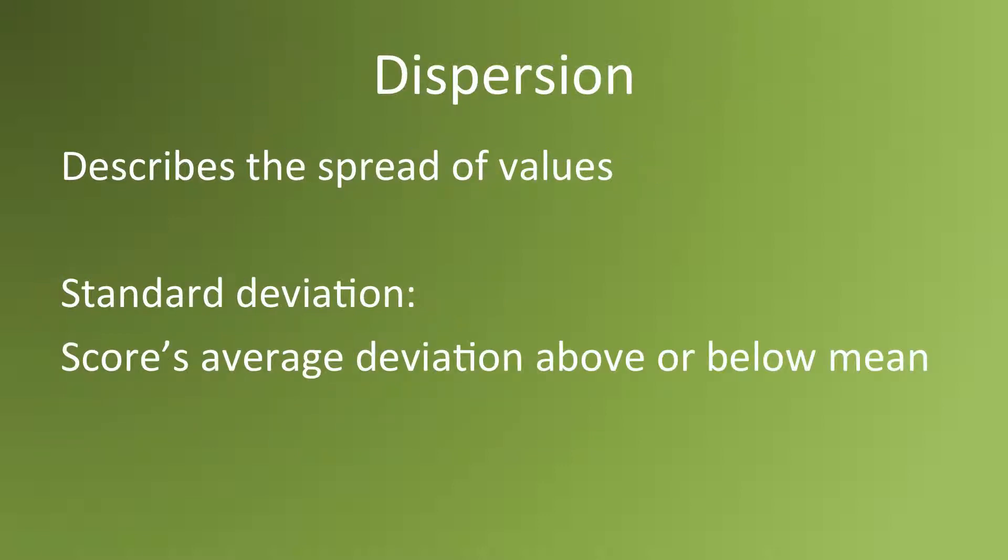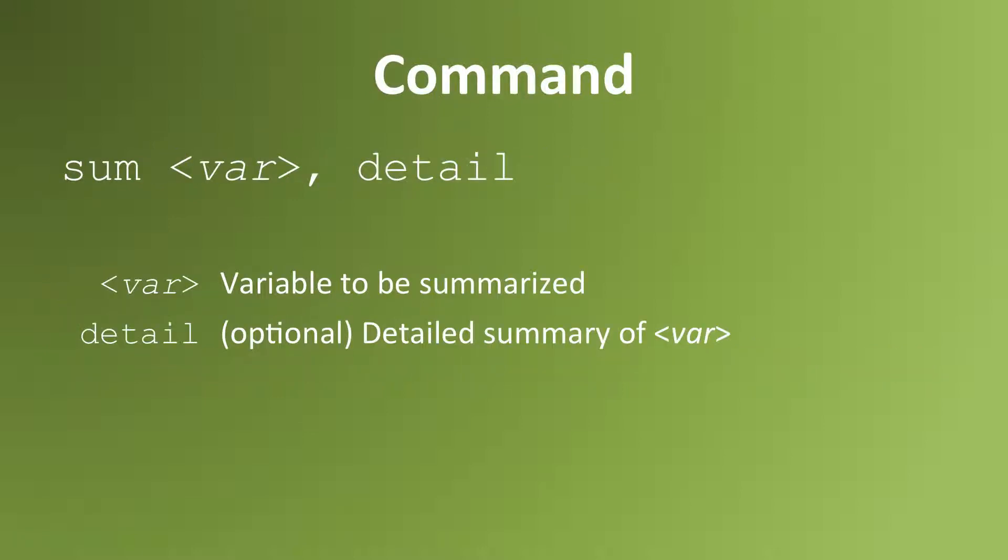Dispersion measures give us an idea of the spread of values. By spread, I mean how often our observations score close to or well away from typical measurements. A common measure of dispersion is the standard deviation. This measure captures the average departure from the sample mean, either above or below. When the deviation is higher, then our observations tend to be further away from the mean. When it's lower, then our observations are closely clustered around the mean.